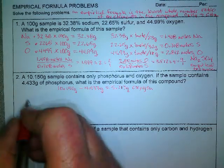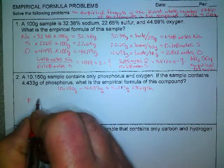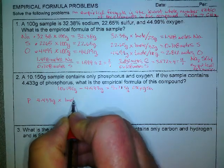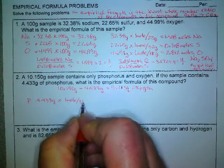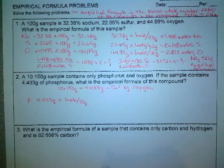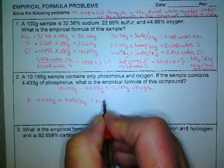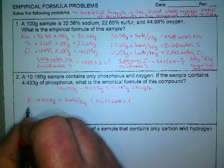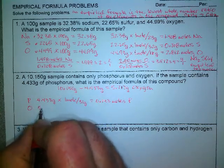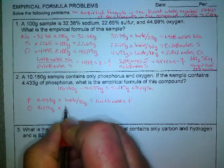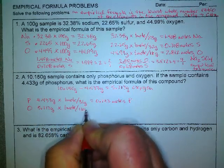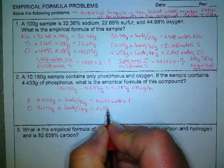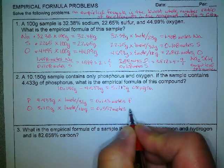So let's go to moles. First, the phosphorus, 4.433 grams times one mole over 31 grams. There are 31 grams of phosphorus in one mole, and that gives me 0.143 moles of phosphorus. Next, the oxygen, 5.717 grams times one mole. Oxygen is 16 grams, so this gives me 0.357 moles of oxygen.